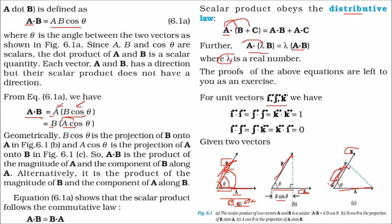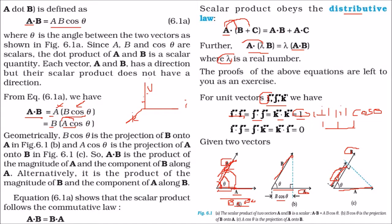For unit vectors i, j, k: i·i = j·j = k·k = 1, because the angle between the same vectors is 0°, so cos0° = 1 and the magnitude is 1. When we take i·j, j·k, or k·i, the angle between these perpendicular unit vectors is 90°, so cos90° = 0, giving 0. Any dot product of two different unit vectors among i, j, k equals zero.